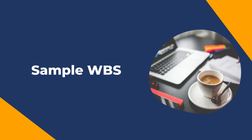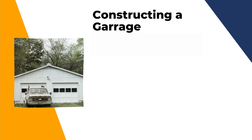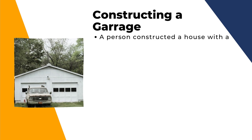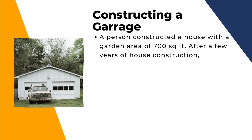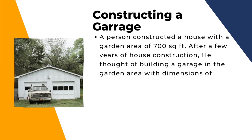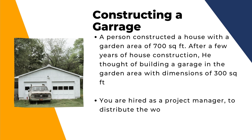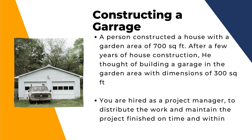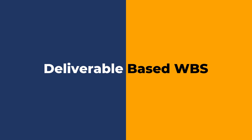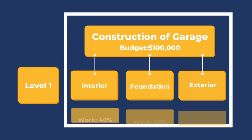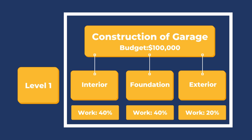Let us start with an example of WBS using a simple project: constructing a garage. A person constructed a house with a garden area of 700 square feet. After a few years, he thought of building a garage in the garden area with dimensions of 300 square feet. You are hired as a project manager to distribute the work and maintain the project finished on time and within budget. The deliverable-based WBS for construction of the garage has three major phases at level 1: interior, foundation, and exterior. Interior has a work share of 40%, foundation 40%, and exterior 20%. The total budget is $100,000.